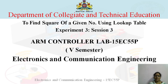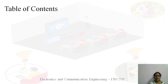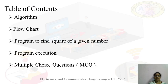Students, in this session we will write an ARM program to find the square of a given number using a lookup table. We will write an algorithm, flowchart, and then the program. Then we will see how to execute this program on Keil µVision 4. Finally, we will see multiple choice questions on this session.